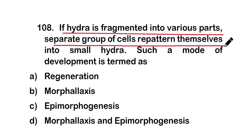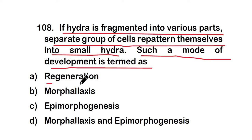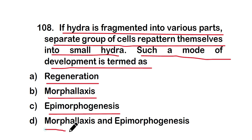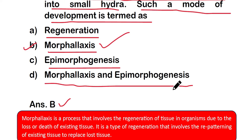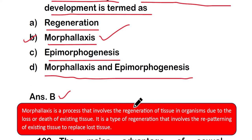Question 108: If hydra is fragmented into various parts and separate groups of cells repattern themselves into small hydra, such a mode of development is termed morphallaxis. Morphallaxis is a process that involves the regeneration of tissue due to loss or death of existing tissue — it is a type of regeneration involving repatterning of existing tissue to replace lost tissues.